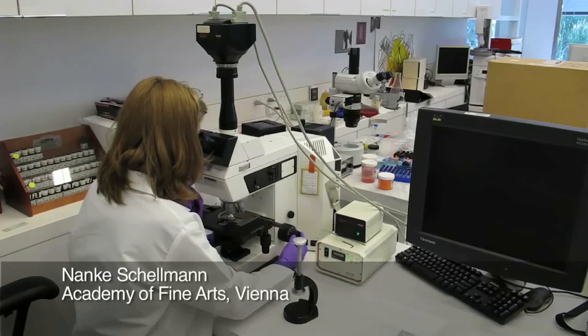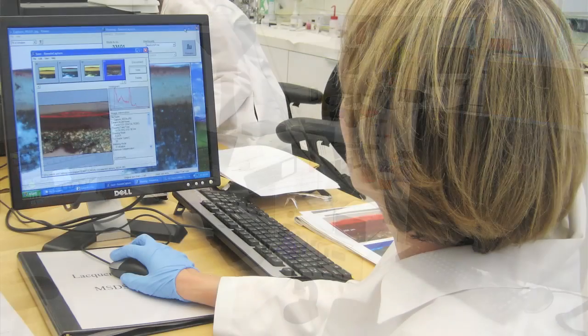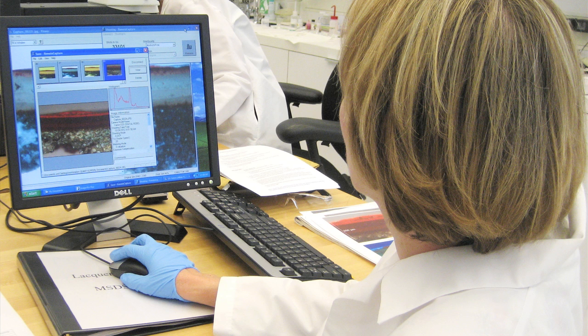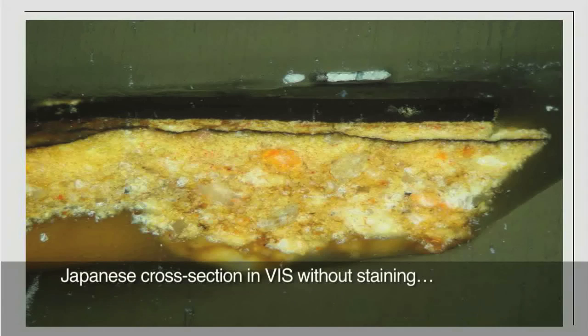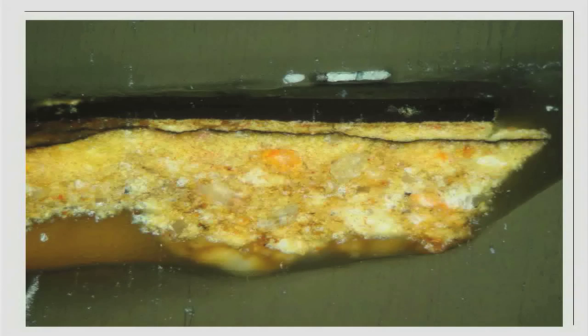Here it can be checked whether the surface is suitably prepared to start the staining procedure and also the initial photographs of the cross-section can be taken in visible and blue light. This image shows a cross-section of a Japanese lacquer coating in visible light, as seen through the microscope.